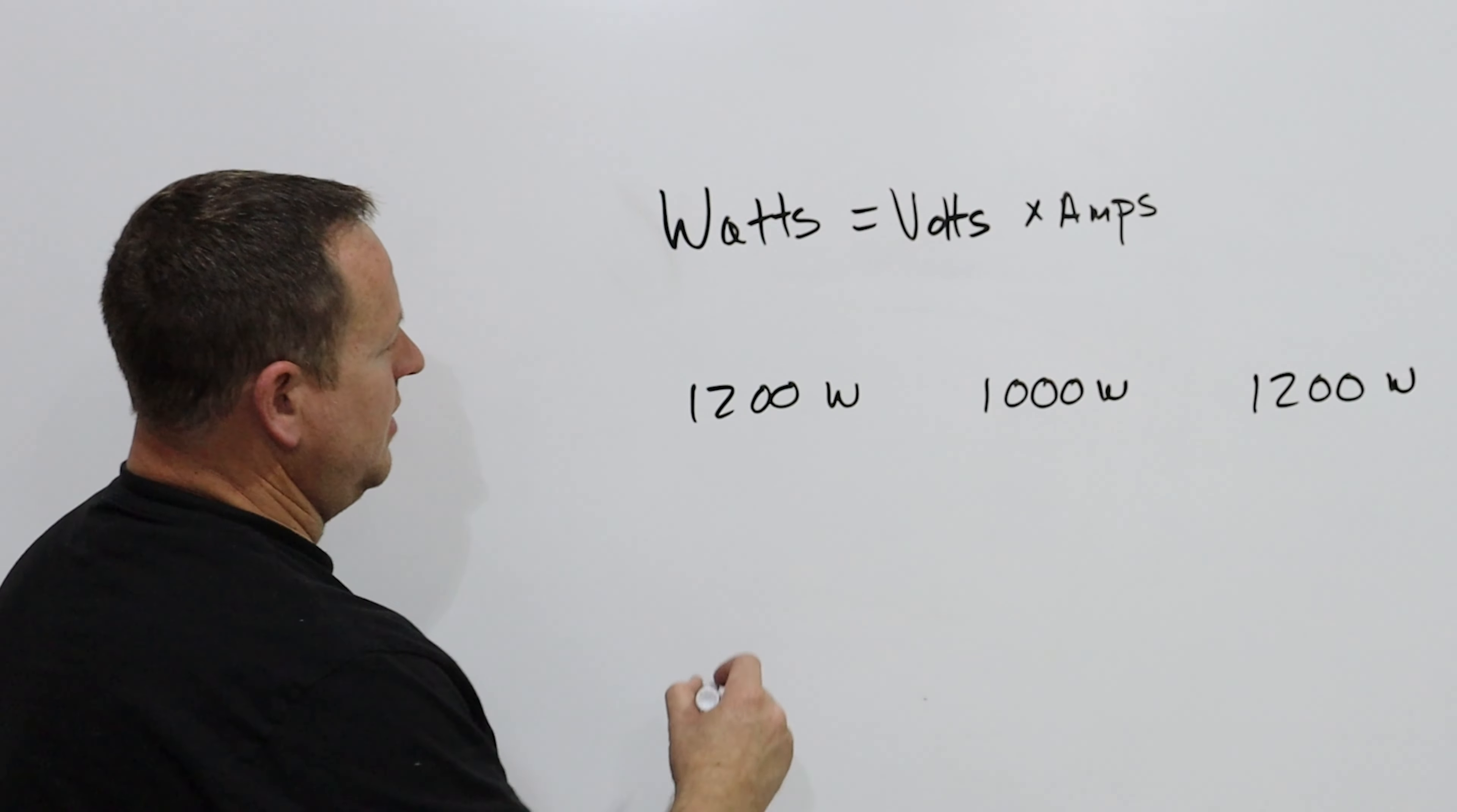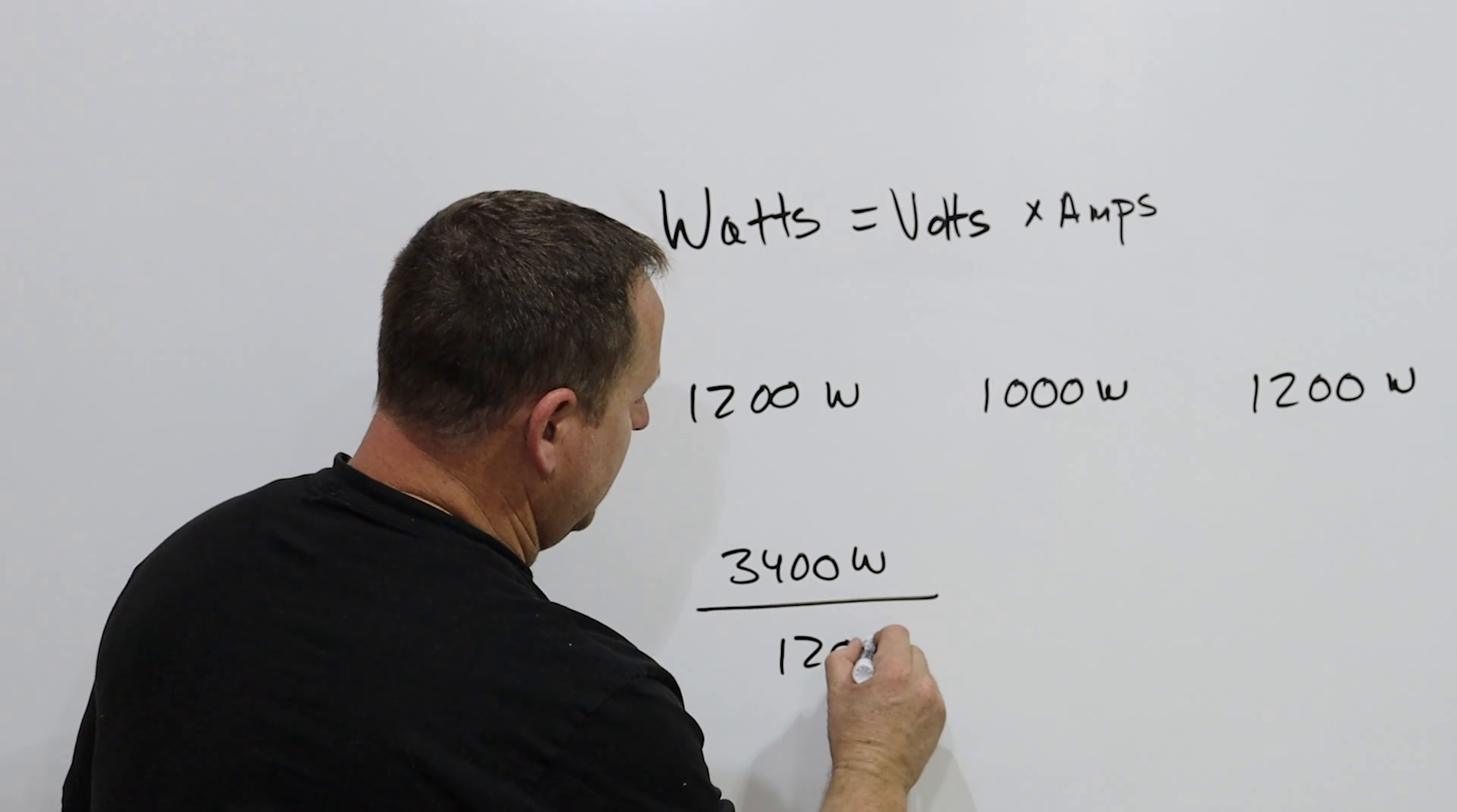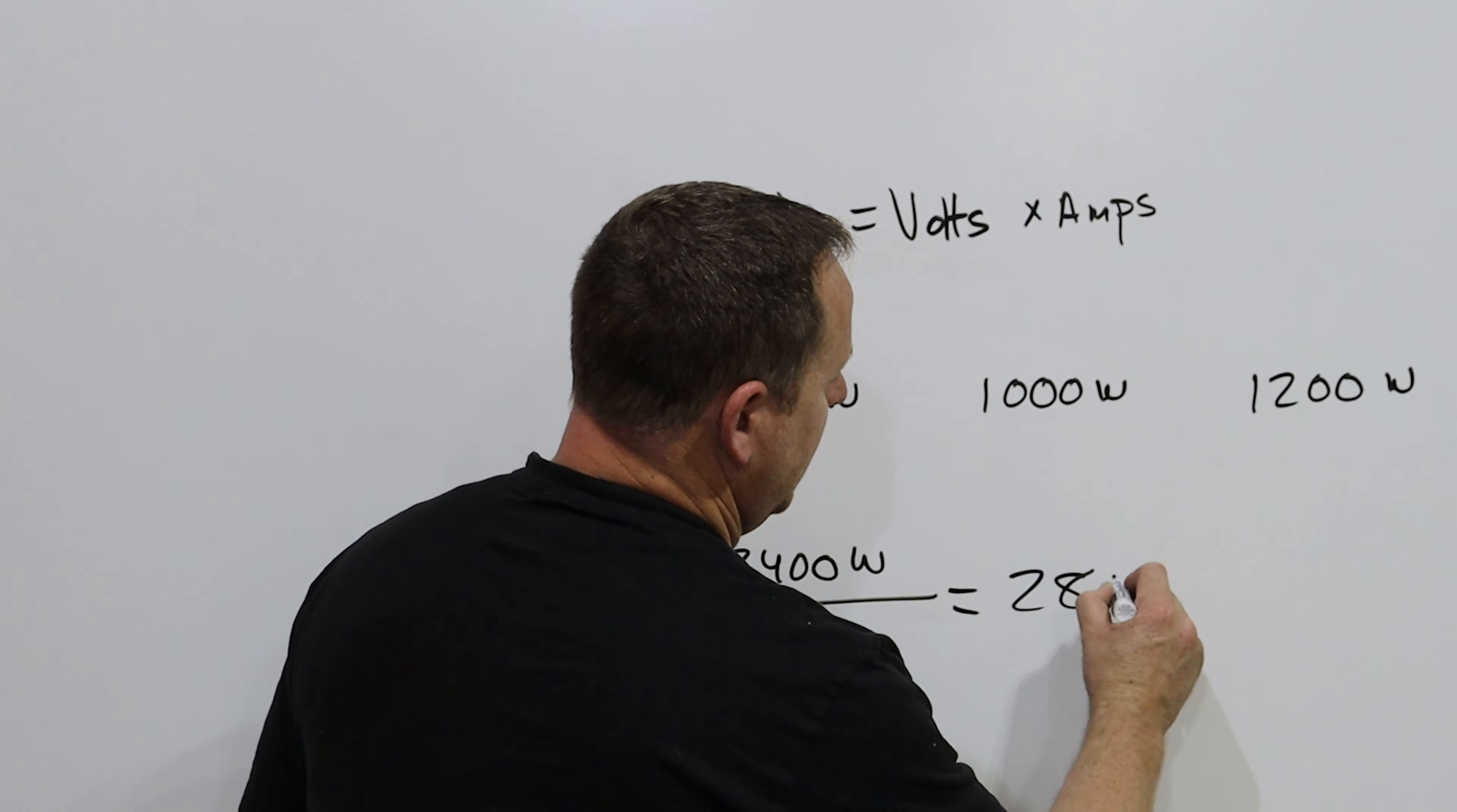We add all this up and get 3400 watts divided by 120 volts. How many amps are we going to draw in a circuit? I'm getting something around 28 amps, which is obviously way too much for the circuit.